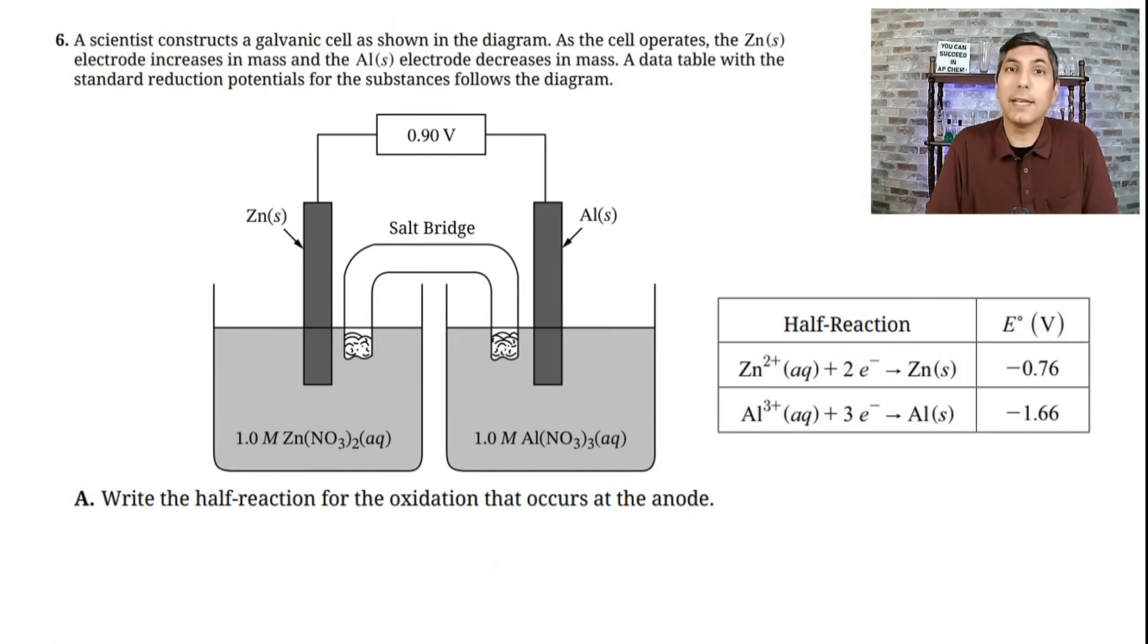Question six is an electrochemistry question. It says a scientist constructs a galvanic cell as shown in the diagram. As the cell operates, the zinc electrode increases in mass and the aluminum electrode decreases in mass. A data table with the standard reduction potentials for the substances follows the diagram. Now there are a couple clues here for part A. Part A says write the half-reaction for the oxidation that occurs at the anode.